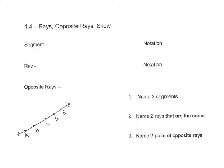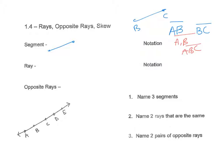A segment is two points and all the infinite points in between. You write a segment with two capital letters, like AB, with a segment bar above it. So BC would be all the points between B and C, including B and C. You don't want a comma between the letters, and you don't want three letters with a segment bar — it's always two letters with the segment bar above.